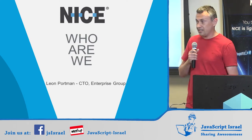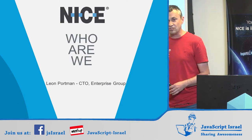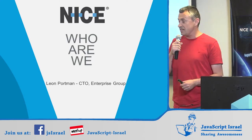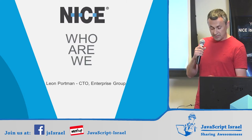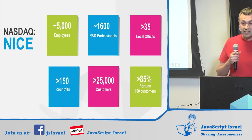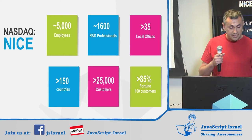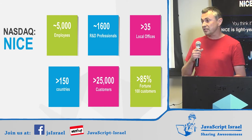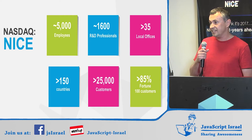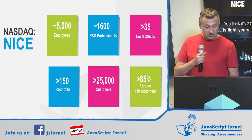Thank you for the introduction — I will not keep you waiting. Obviously you are dying to see visualization in HTML and JavaScript. A couple of words about NICE: some numbers — we are 5,000 employees, more than 35 locations, more than 25,000 customers, and we are 30 years old but still young and using state-of-the-art technologies.